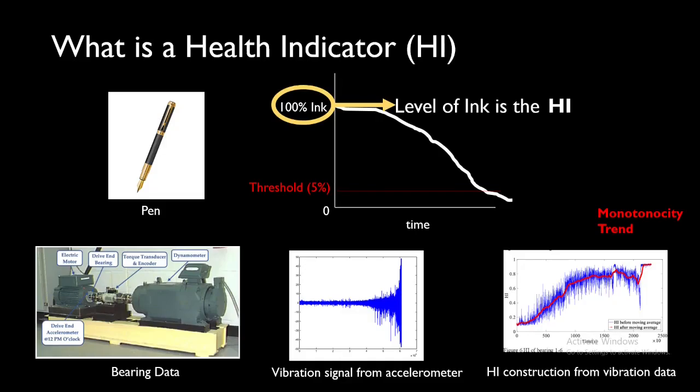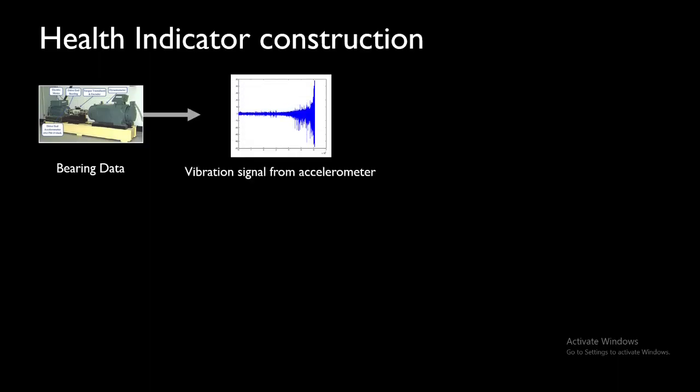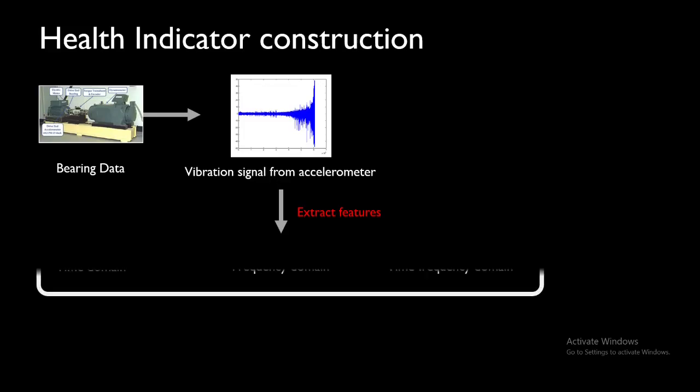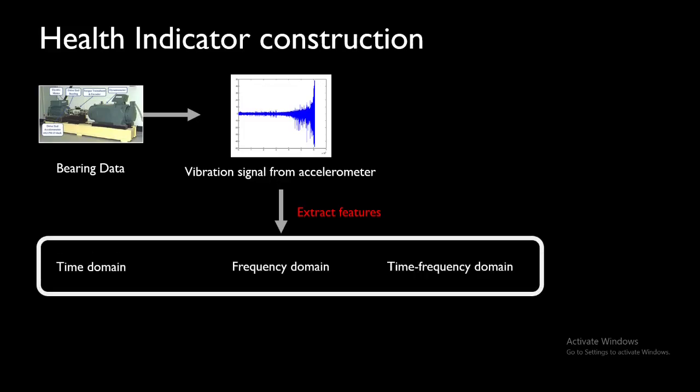That is what our goal is. Let's see how traditionally health indicators are constructed. You have your bearing setup here, you got the vibration signal using an accelerometer, then you extract features from this vibration signal. What type of features you can extract? They can be time domain, frequency domain, and time-frequency domain features. It depends which are the important features. Then comes feature selection, but for now this is the overall idea.